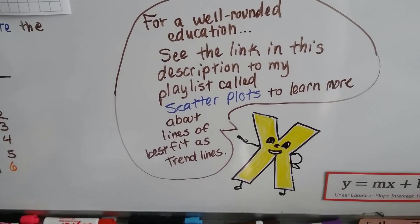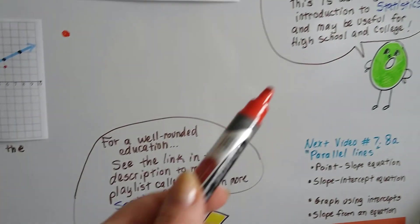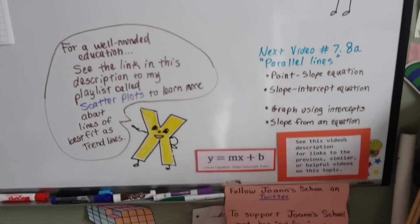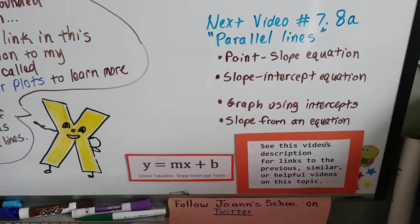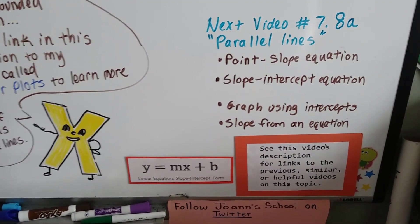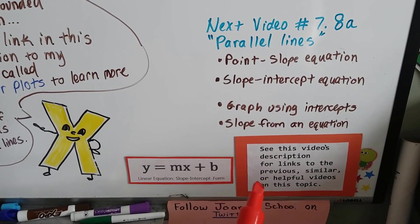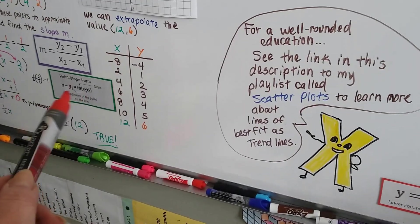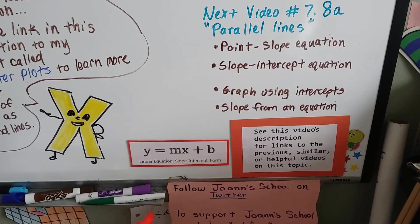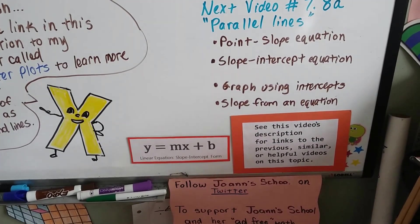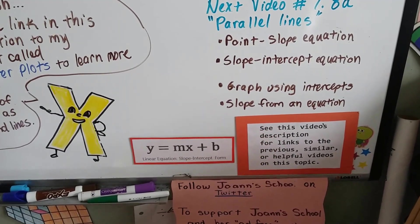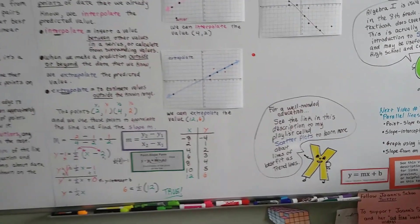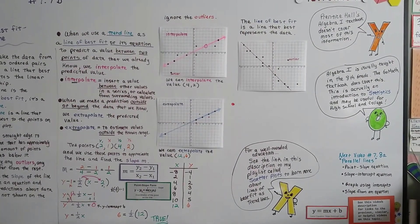Our next video is going to be 7.8a. We're going to talk about parallel lines on a coordinate plane. And if you want links to the previous videos of point-slope equation or slope-intercept equation, here is slope-intercept form. And point-slope is the one we did here. And if you want to know about how to graph using intercepts like that y-intercept b or learn how to find a slope from an equation, all those links are going to be in this description. Plus the scatter plot one. So keep up the good work. Keep trying. Keep plugging away at this. We can get through this together and you'll be fine.